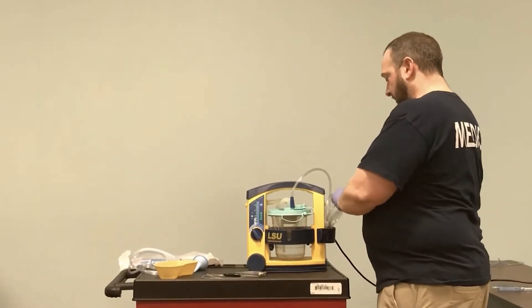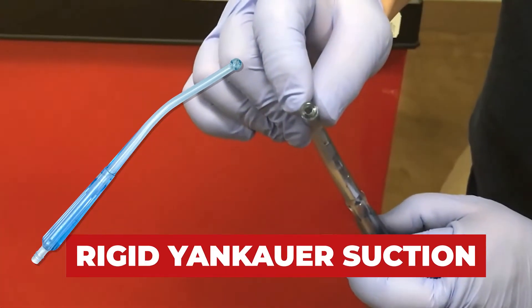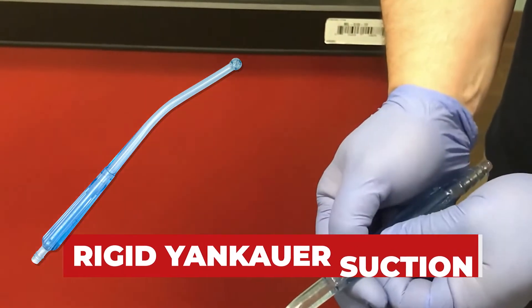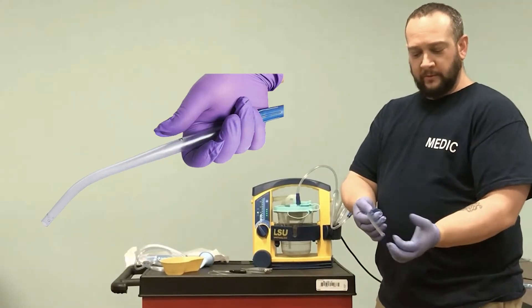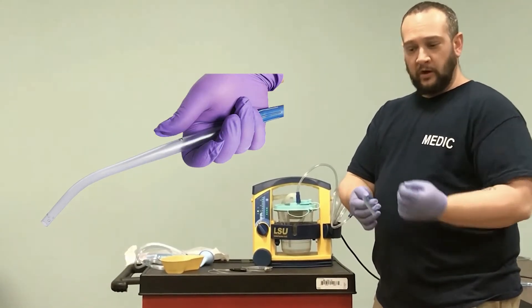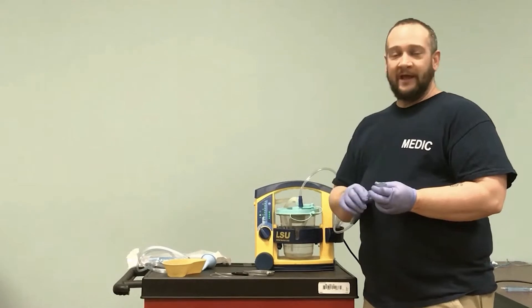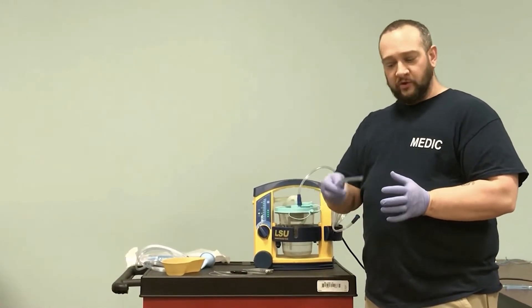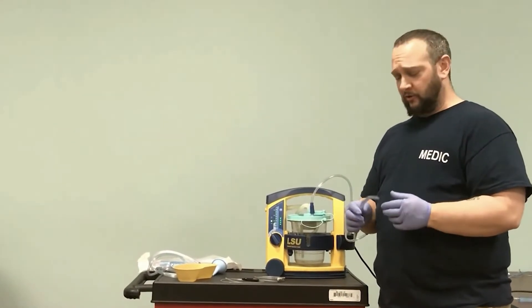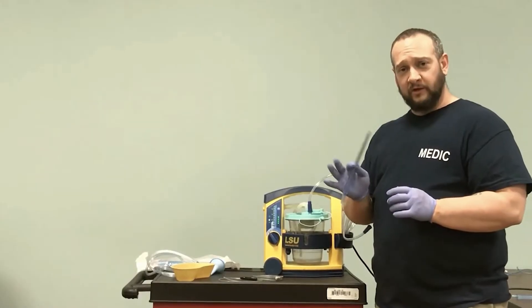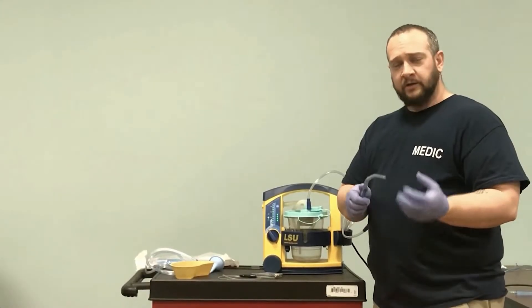We have our rigid Yankauer plastic suction device. This is firm, rigid plastic with a thumb port. When this end attaches to our tubing, we use our thumb to draw secretions through. It has a small internal diameter, so if we're looking at teeth particles or food, it isn't going to work well. Sometimes we can use this to scoop some of that out. The thumb creates the vacuum effect and we suction.